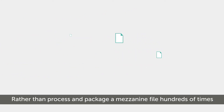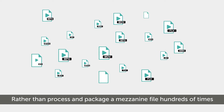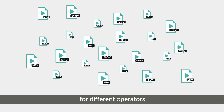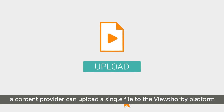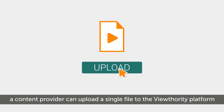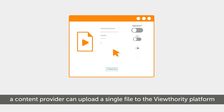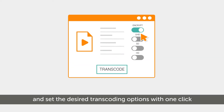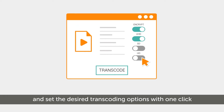Rather than process and package a mezzanine file hundreds of times for different operators, a content provider can upload a single file to the View Authority platform and set the desired transcoding options with one click.